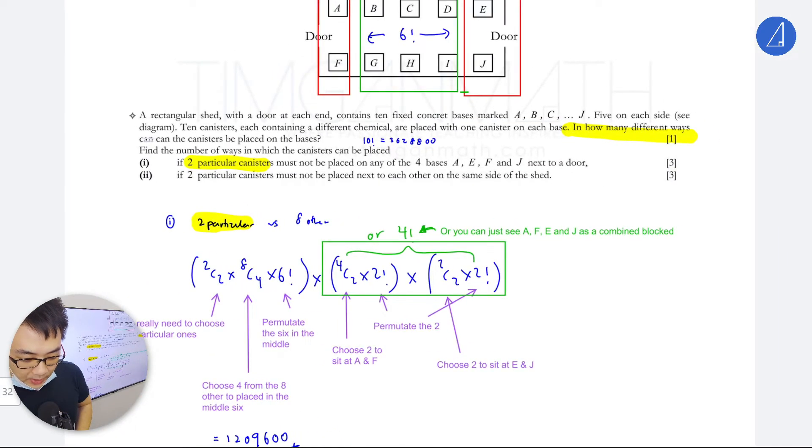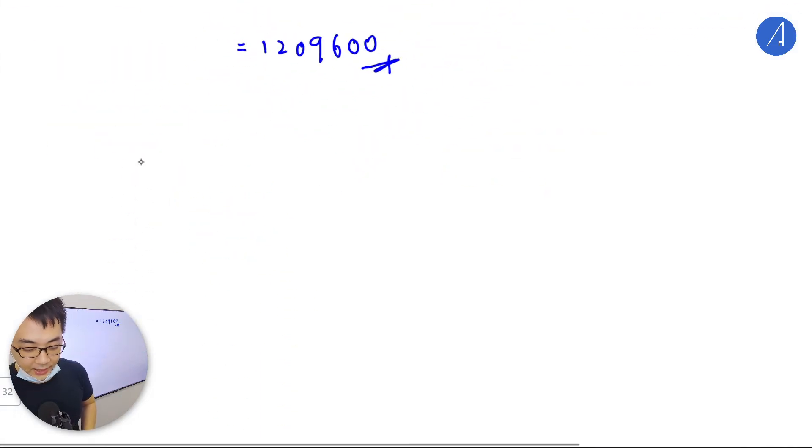These two parts should be quite manageable. The third part may need a bit of thinking. So if two particular canisters must not be placed next to each other, the way I would think about this - I do not want to do the direct method because that will be quite time consuming. I will do the complement method.